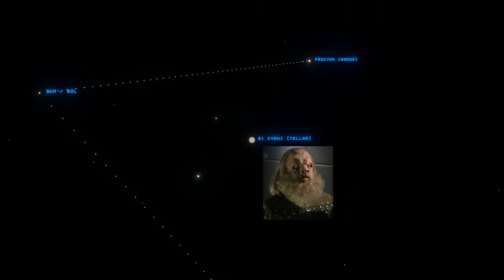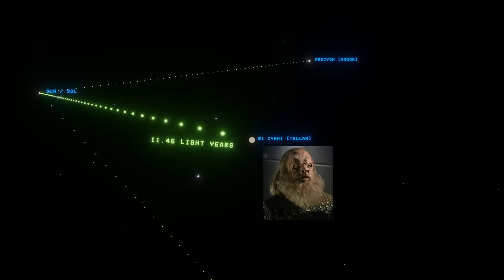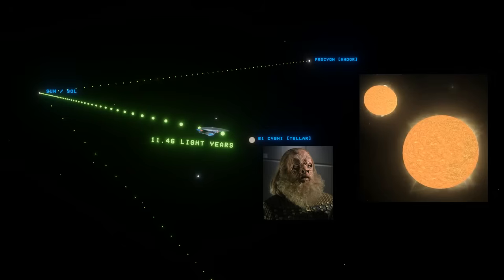Now onto Tellur, or the home of the bullheaded but somewhat pig-like Tellurites. The Tellurite system is, in real life, the star 61 Cygni, another binary star in the constellation of Cygnus. It's 11.4 light years from Earth, similar to the distance of Andor, which would take the Enterprise about 11 days to reach it from Earth at warp 6.